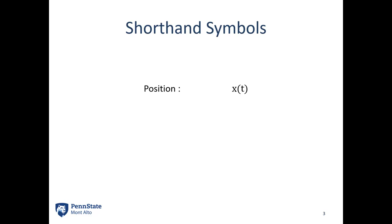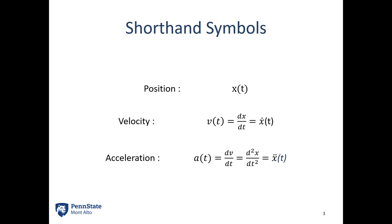Some shorthand symbols: we have position x of t, which doesn't really have a shorthand. For velocity, I can write v of t, which is the change in position over time, and I might also call that x-dot of t. That dot indicates the time derivative of x. This will be important when we have velocities in two directions — I'll have x-dot and y-dot when I get to rectangular coordinate systems. The acceleration a of t is written as x-double-dot of t as another shorthand symbol.